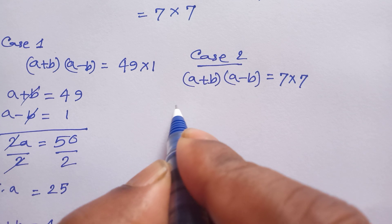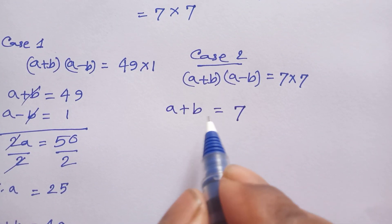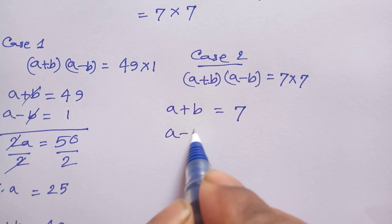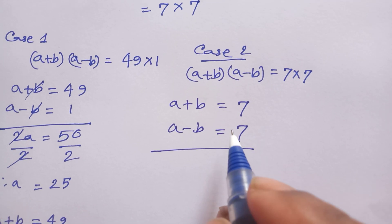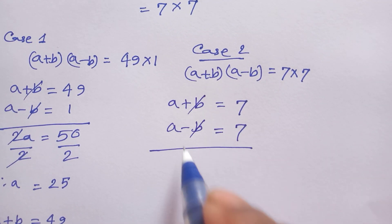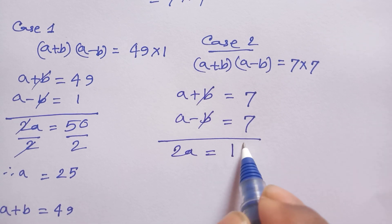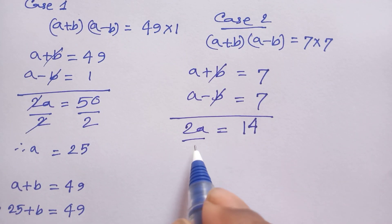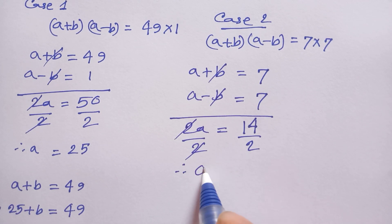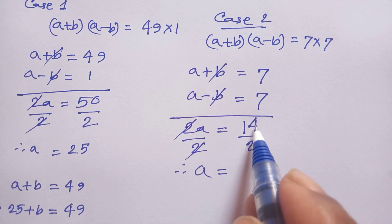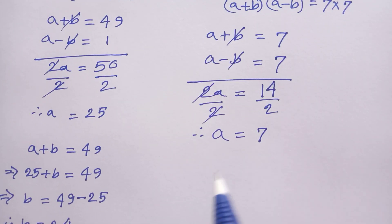For the second solution, we compare Case 2: a plus b equals 7 — this is the first equation — and a minus b equals 7. We add both equations so b cancels out. We have 2a equals 14. Dividing both sides by 2, the twos cancel, so a equals 14 divided by 2, which is 7.